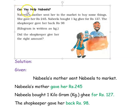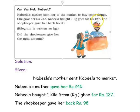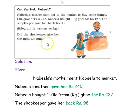The question given is: Can you help Nabila? Nabila's mother sent her to the market to buy some things. She gave her rupees 245. Nabila bought 1 kg ghee for rupees 127. The shopkeeper gave her back rupees 98. Here, kilogram is written as kg. This kg represents kilogram. Did the shopkeeper give her the right amount?